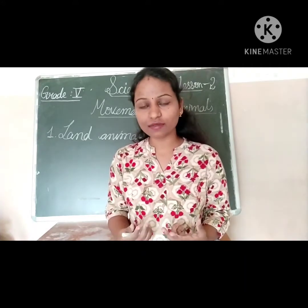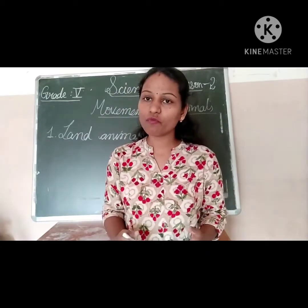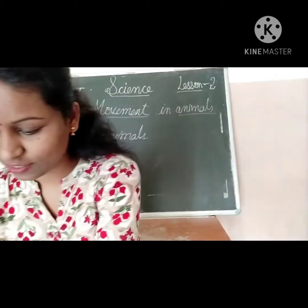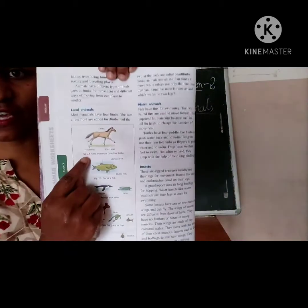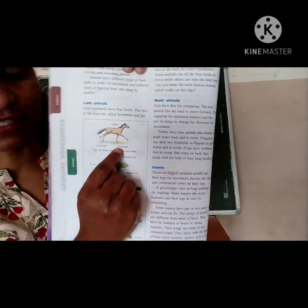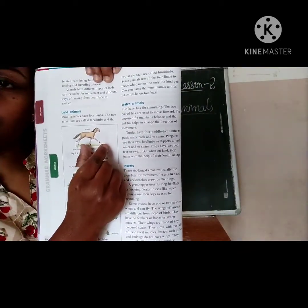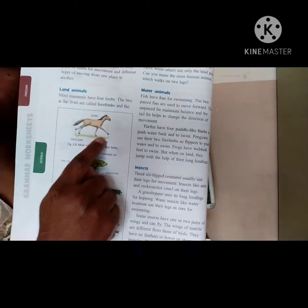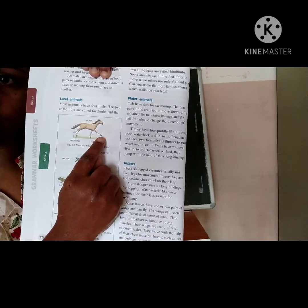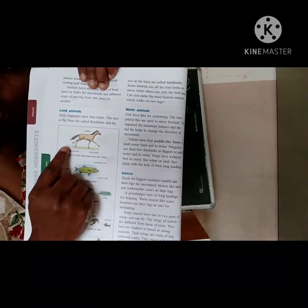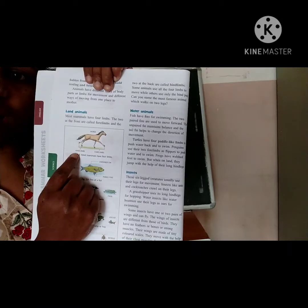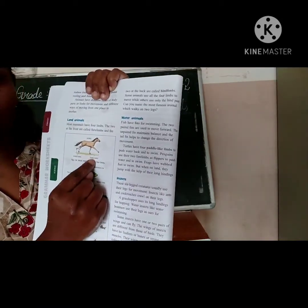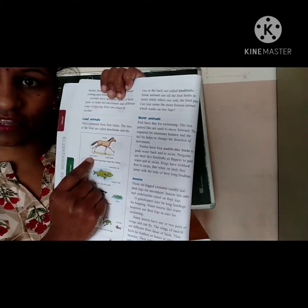But how do they move, children? They move with the forelegs and hind limbs. As you can see in this picture, if you see the horse — this is the forelegs, the front ones. The two front limbs are called forelegs and the back legs are called hind limbs.